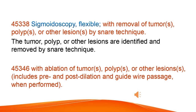Sigmoidoscopy, flexible, with removal of tumor, polyp, or other lesion by snare technique. The tumor, polyp, or other lesions are identified and removed by snare technique. With ablation of tumor, polyp, or other lesions — includes pre- and post-dilation and guide wire passage, when performed.